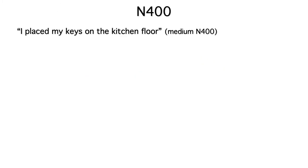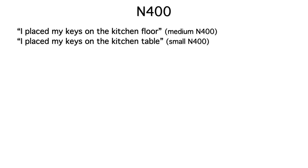For example, 'I place my keys on the kitchen floor' is a perfectly reasonable thing to say, but 'floor' is somewhat unexpected, so it would give you a medium-sized N-400. If the sentence ended in 'table,' that would be more expected, so 'table' would elicit only a small N-400.